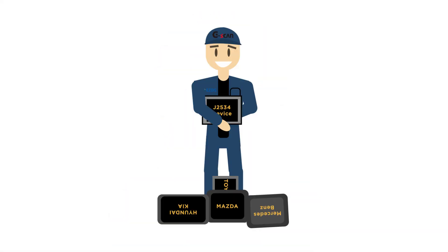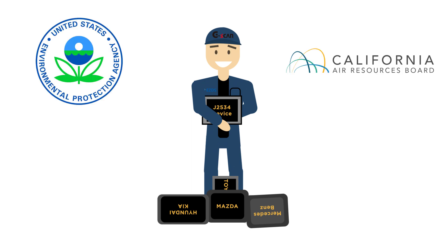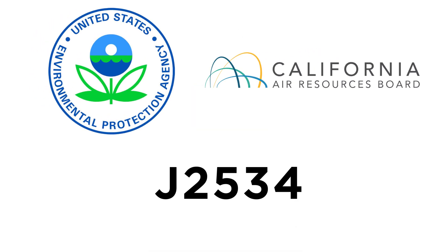J2534 has been regulated and constantly modified by the U.S. government, such as EPA and CARB. Their regulations require all vehicle manufacturers in the U.S. to provide a J2534 service, including reprogramming application software available to everyone. If vehicle manufacturers want to sell vehicles in the U.S., they had to comply with the J2534 standard from model year 2004 and up. In a nutshell, J2534 is an interface standard for communication between a PC and a vehicle.